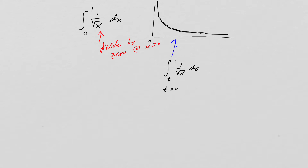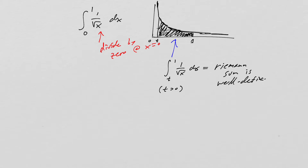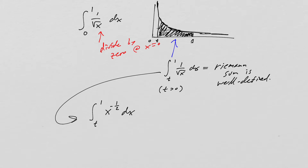Here t is greater than 0. So t is right near the asymptote but can be really, really close. We know we're dealing with a finite area under the curve and the Riemann sum is well-defined. The question is: I'm going to take successive integrals, marching t closer and closer to 0. Let's actually compute it — we have the integral from t to 1 of x to the negative one-half dx.